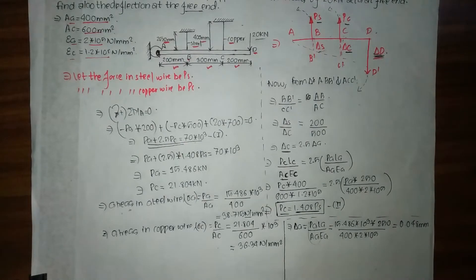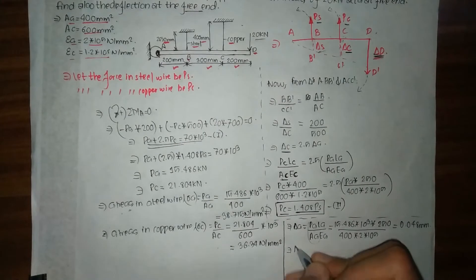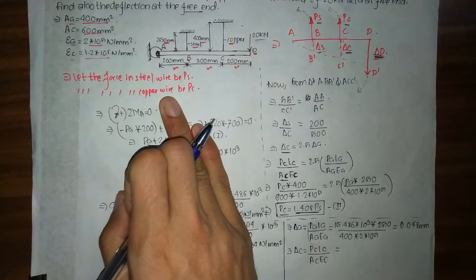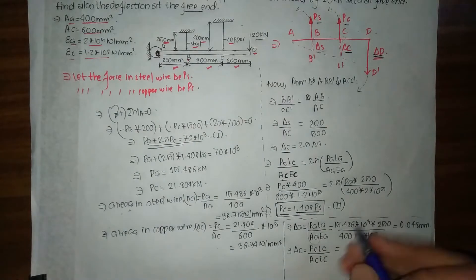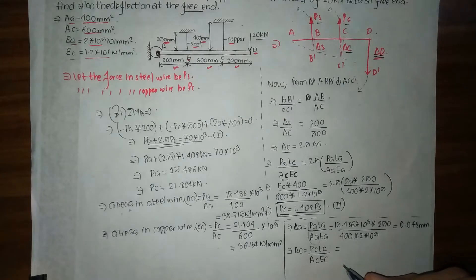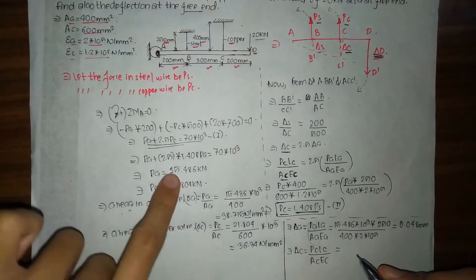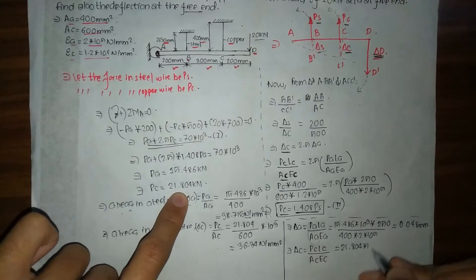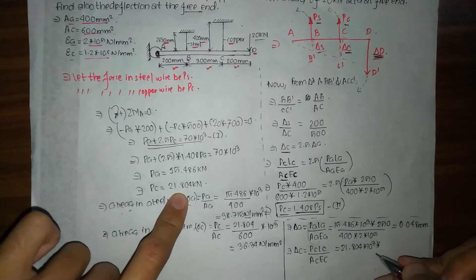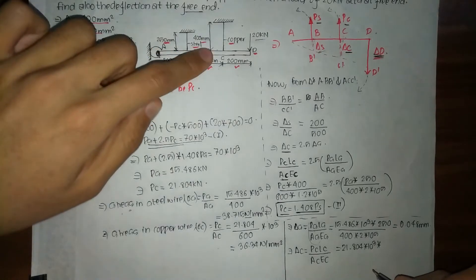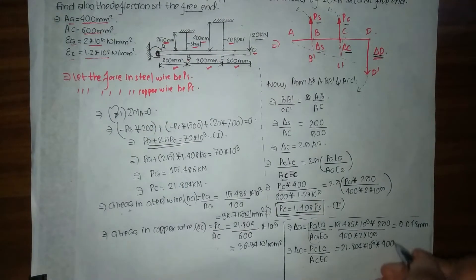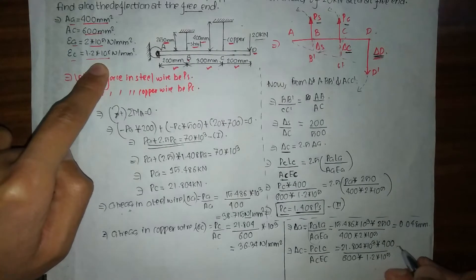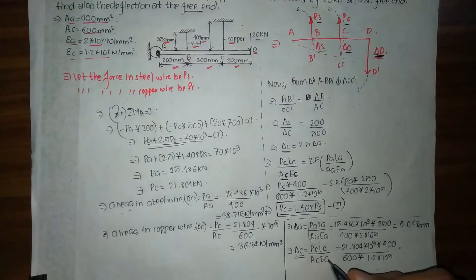Next we find the deflection for the copper wire: del_C = P_C·L_C / (A_C·E_C) = 21.804×10³ × 400 / (600 × 1.2×10⁵). On solving, del_C = 0.121 mm.